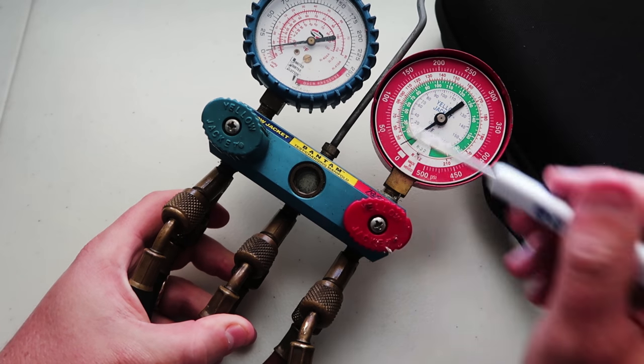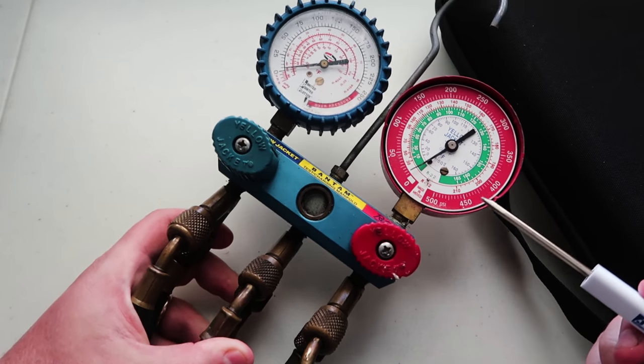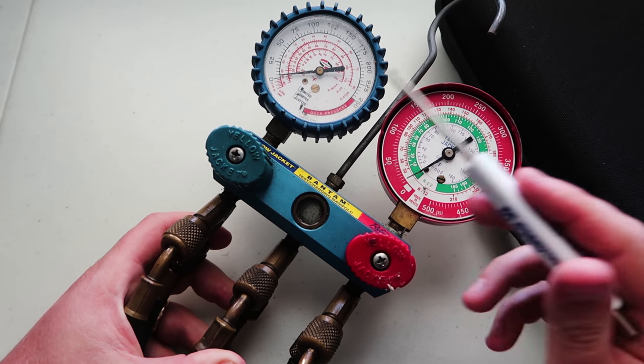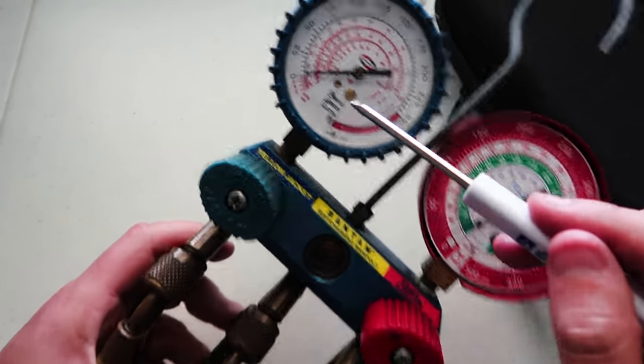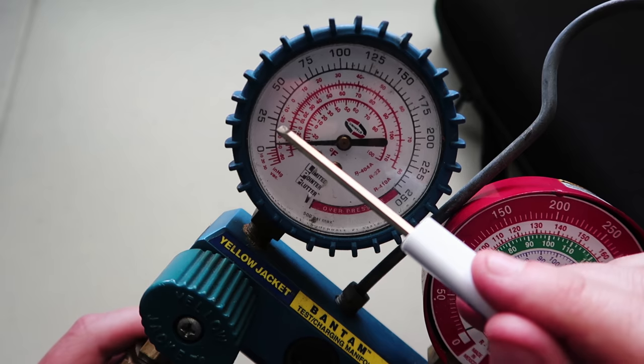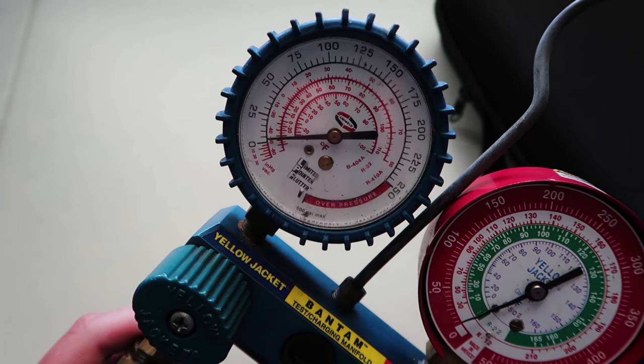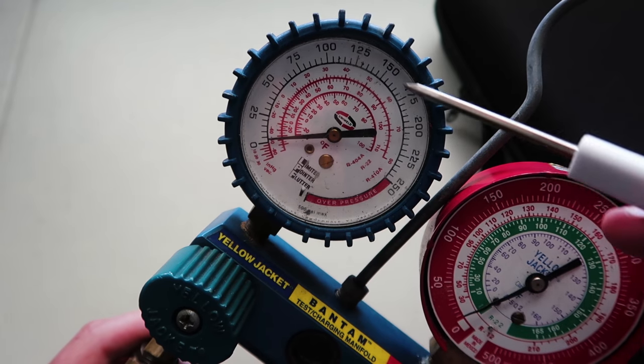The first thing to note is that these are what measure the pressure, and then we can convert that pressure into temperatures in order to calculate things like superheat and subcooling. These scales on here on the inside show different temperatures for different refrigerants, and when the needle points at those temperatures, that's what we call the saturation temperature. That goes along with the pressure that's listed on the outside.